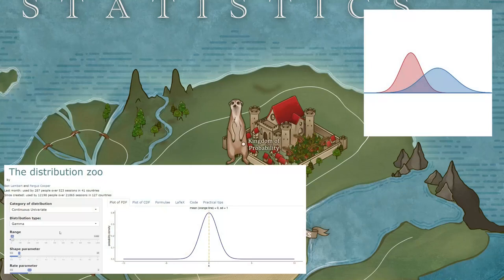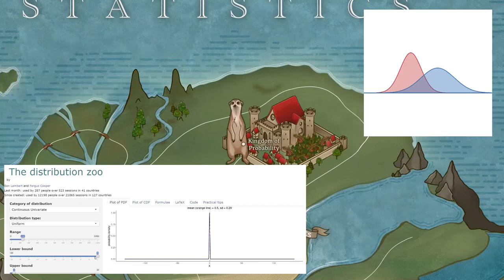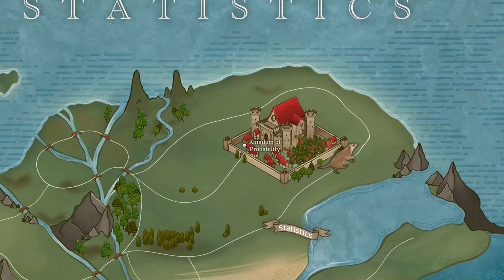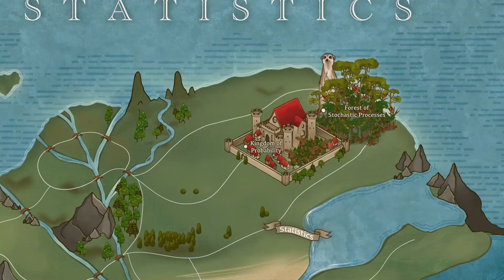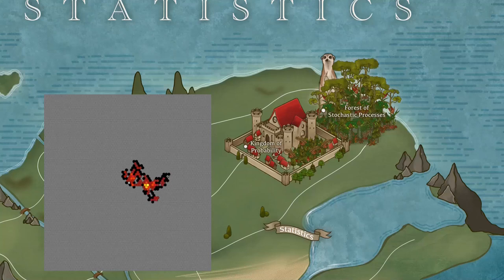In the center of the kingdom lies the garden of distributions. Distributions are probability's main working tools — a way to classify the uncertainty and say, this uncertainty has this shape, while this uncertainty has this one. The garden is only a civilized version of the wild forest of stochastic processes, inhabited by strange flora and fauna, such as Markov chains, Brownian motion, Poisson process, and martingales. Stochastic processes are concerned with the evolution of uncertainty, most often through time. Think of them as more complex tools, which can help us model even more complex world phenomena.